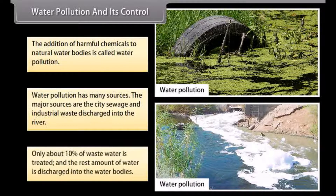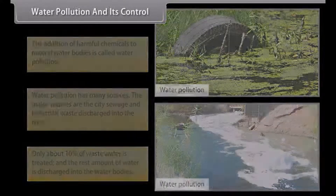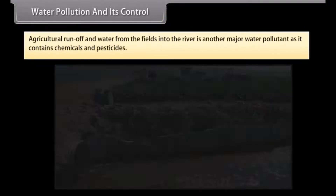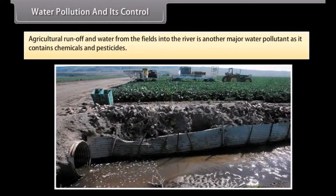Only about 10% of waste water is treated; the rest is discharged into water bodies. Agricultural runoff from fields into rivers is another major water pollutant, as it contains chemicals and pesticides.